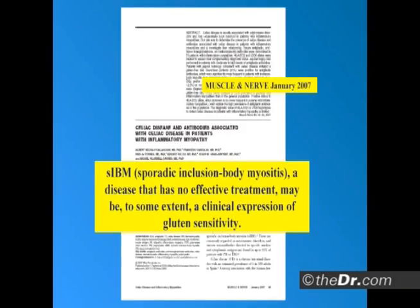Sporadic inclusion body myositis, the most common cause of muscle pain in patients over 50, a disease that has no effective treatment, may be to some extent a clinical expression of gluten sensitivity. When they have muscle pain so bad, that's the only ones that make it in and get the diagnosis — and what do they get? Steroids. But no effective treatment. Steroids don't work for these people.